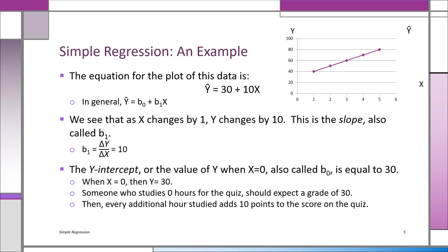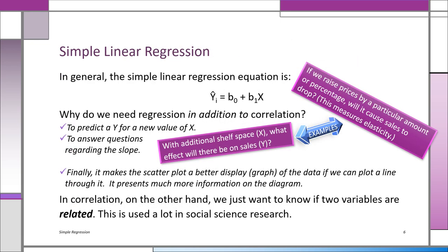If someone studies zero hours, they should get a grade of 30. For six hours of study: 30 plus 10 times 6 equals 90 — the expected grade, even though it's outside our data set. The regression equation is y-hat-i equals b0 plus b1·x. Don't confuse y-hat (the points on the line) with the input data y-i. b0 is the intercept and b1 is the slope.